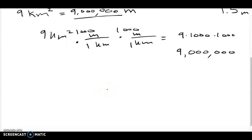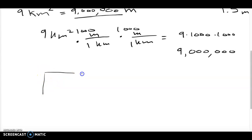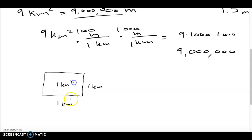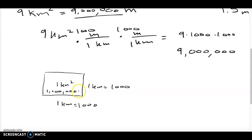Conceptually, consider a one kilometer by one kilometer square. That's 1 km squared for the area, but if I convert each side to meters it becomes 1,000 by 1,000. A thousand times a thousand is one million, so one kilometer squared equals one million meters squared. Since we have 9 of these, 9 km squared equals 9 million meters squared. Remember, squared just means an area.